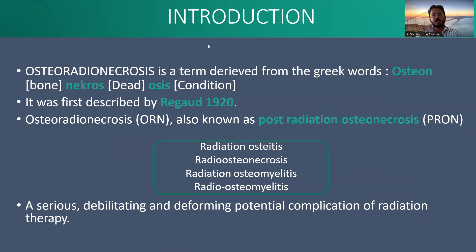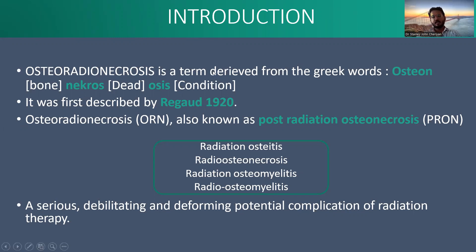Osteoradionecrosis is a term divided into the Greek words: osteone meaning bone, necrosis meaning dead, and -osis meaning condition. This was described by Regard in 1920. It is also known by various other terms like post-radiation osteonecrosis, radiation osteitis, radioostenecrosis, radiation osteomyelitis, and radio-osteomyelitis. It is a serious, debilitating, deforming potential complication of radiation therapy following cancer surgery.